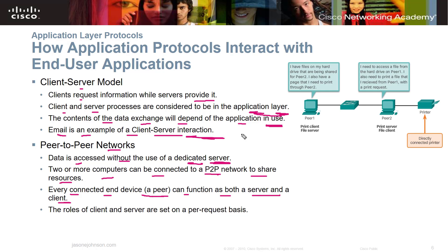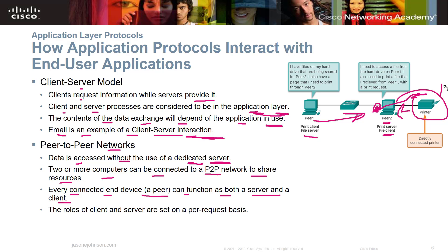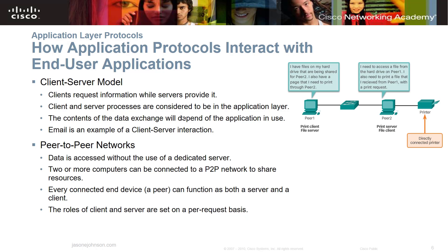In peer-to-peer networks, data is accessed without a dedicated server. Two or more computers can be connected to share resources, and every connected end device — a peer — can function as both server and client. For example, one computer can share its printer: the peer with the printer says 'I've got a printer attached — you can print to me,' and the other peer sends the print job, which gets spooled and passed to the printer. The roles of client and server are set on a per-request basis.